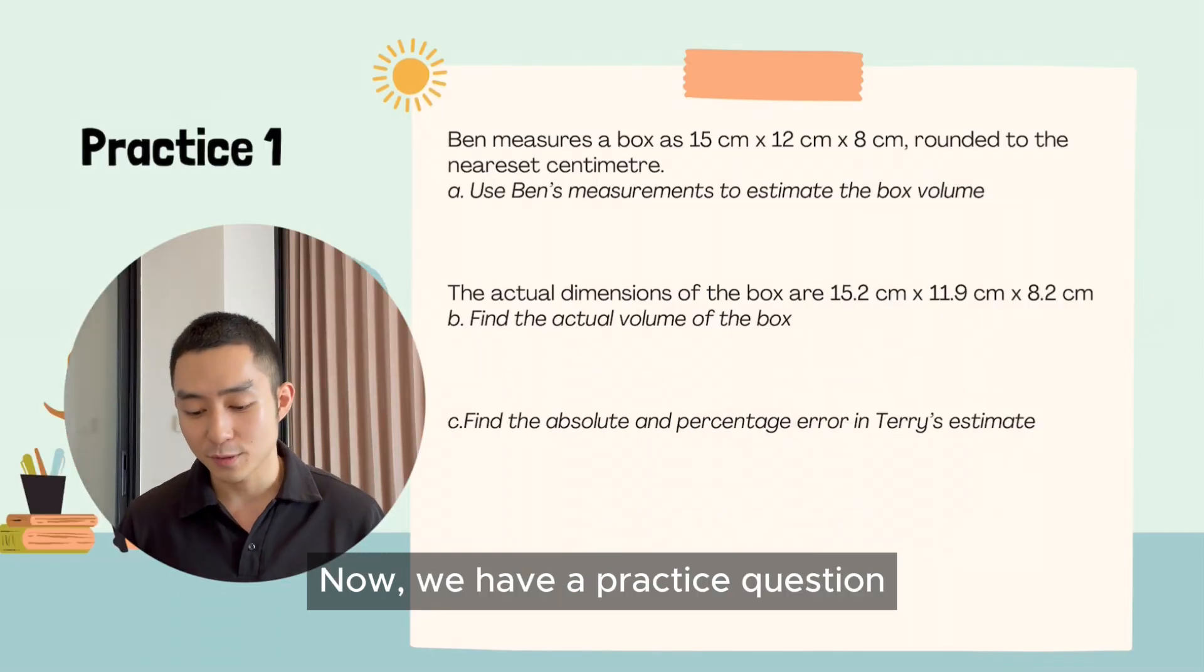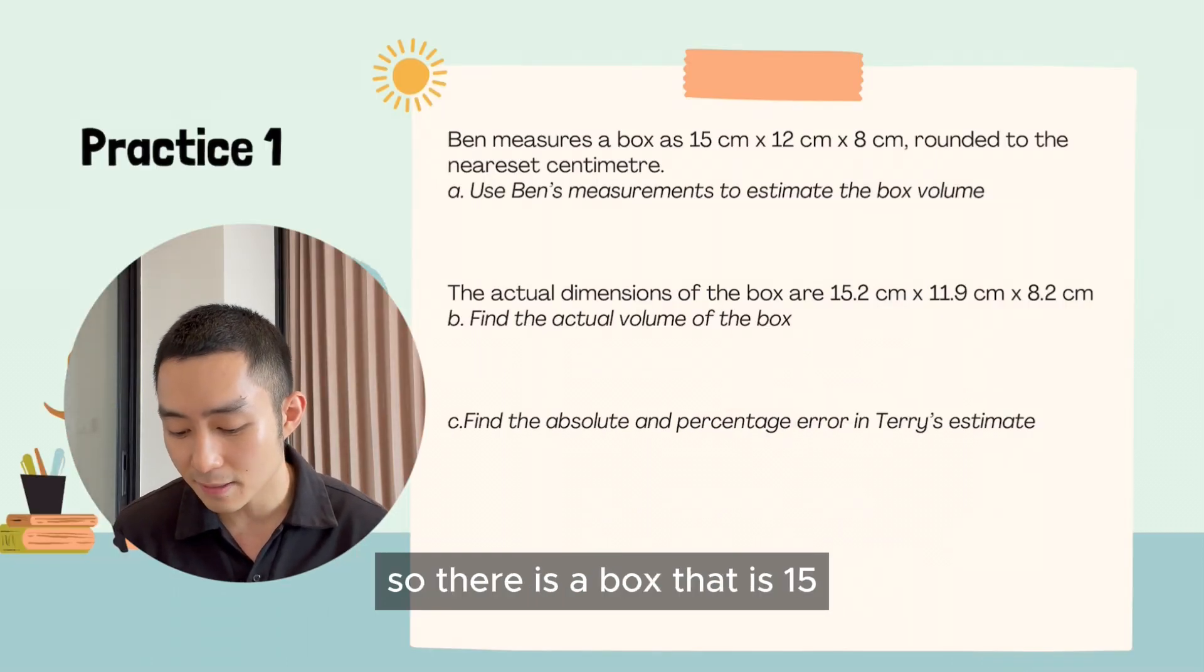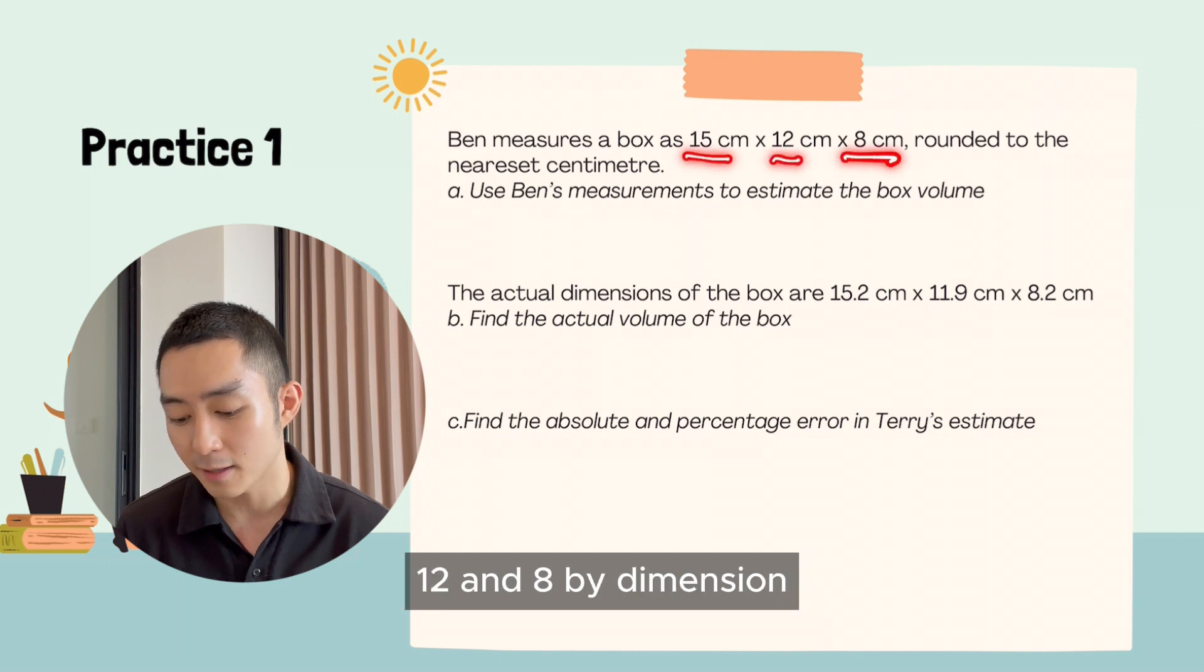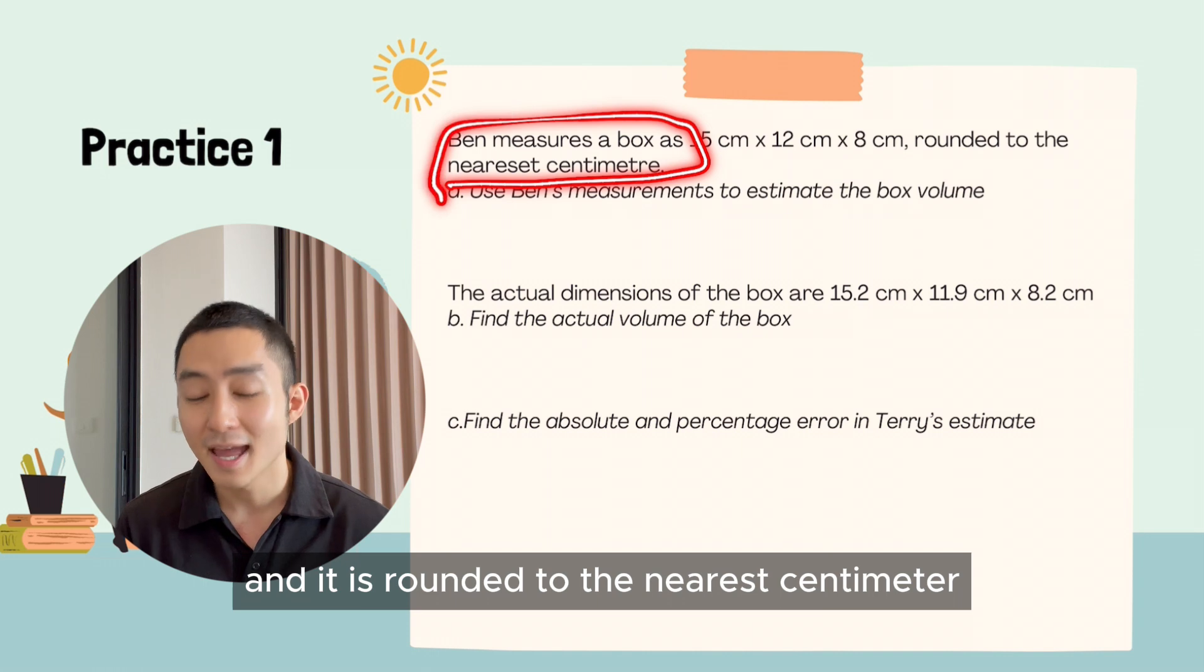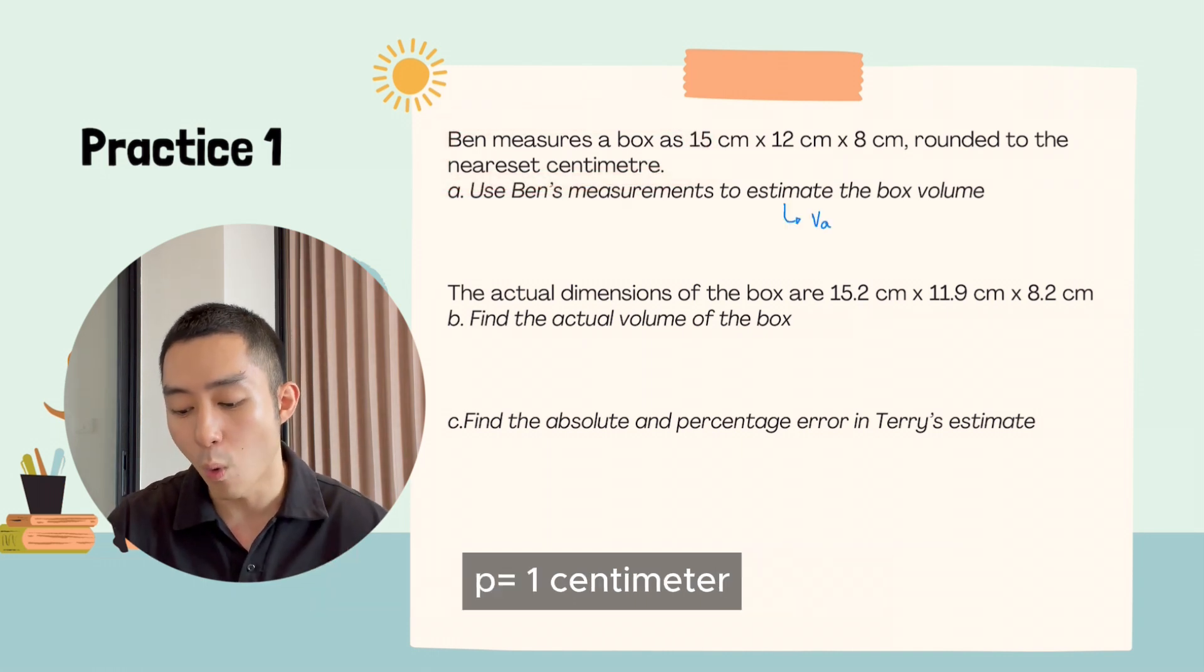Now we have a practice question. There is a box that is 15, 12, and 8 by dimension, and it is rounded to the nearest centimeter. That's the precision that we have, one centimeter.